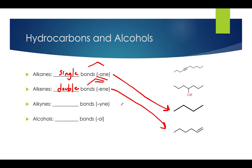Alkynes are like alkenes in both naming and structure, but instead of double bonds, they consist of at least one triple bond. This is an alkene, and this is an alkyne. This one here is an example of an alkyne — it's called 1-decyne.